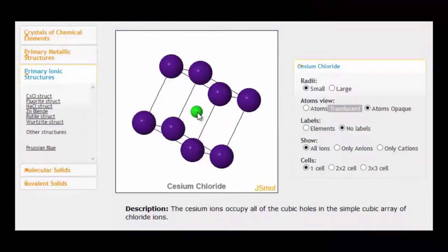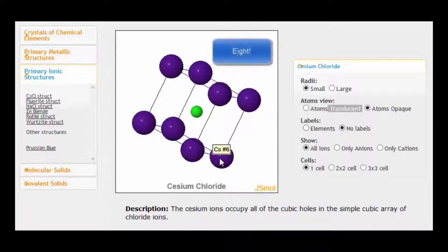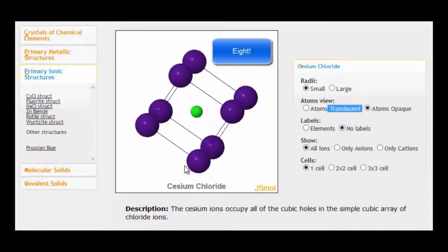And you can see that we've got the chloride ion in the center here, and it's surrounded in a cubic arrangement by four cesiums. You can twist and turn it around like that.